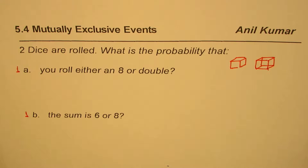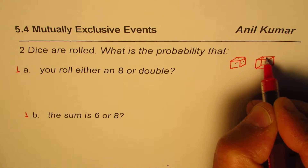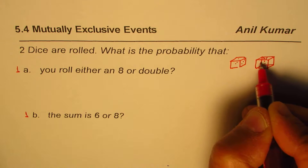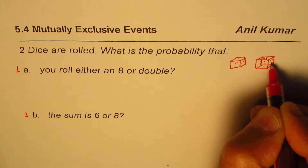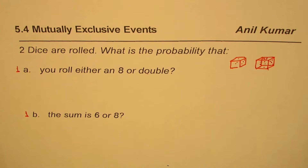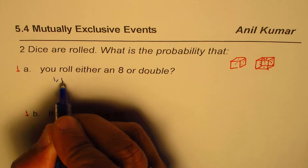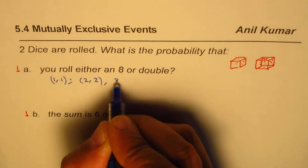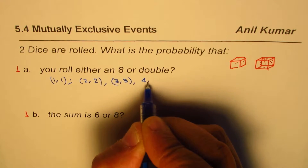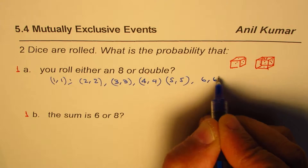Both dice are standard with numbers from 1 to 6. Now what we need to do is answer these questions. The first one is: you roll either an eight or a double. Double means the same numbers on both dice — so double is 1-1, 2-2, 3-3, 4-4, 5-5, and 6-6.